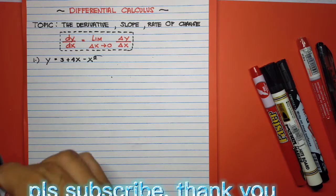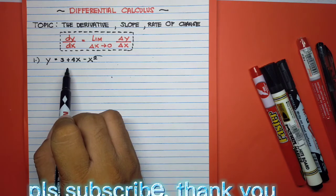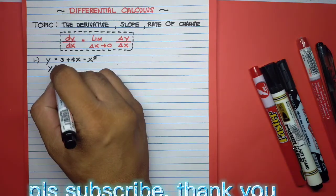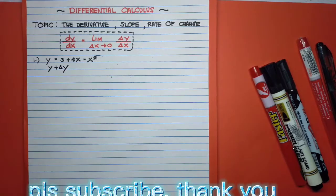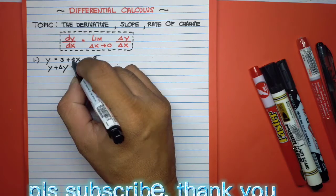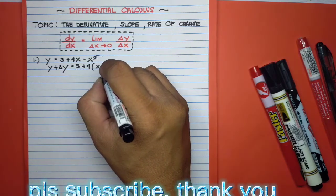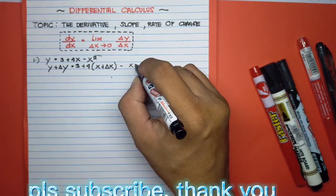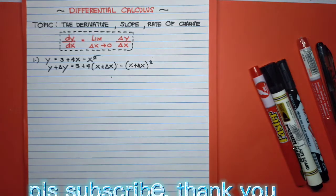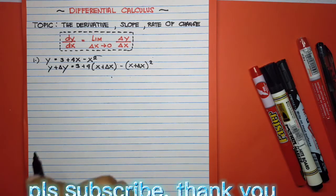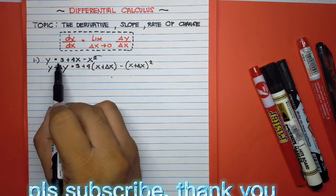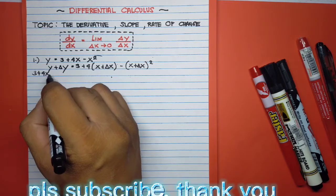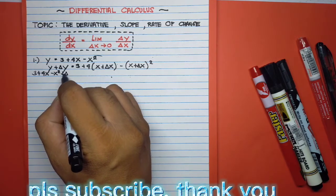We have Example 1: y is equal to 3 plus 4x minus x squared. First, we substitute y plus delta y for y, so y plus delta y equals 3 plus 4 times (x plus delta x) minus (x plus delta x) squared. We replace y with 3 plus 4x minus x squared on the left, giving us 3 plus 4x minus x squared plus delta y.